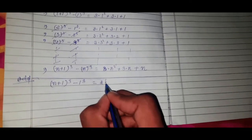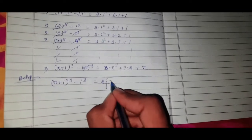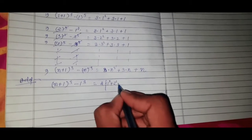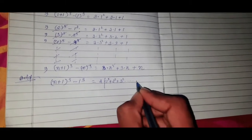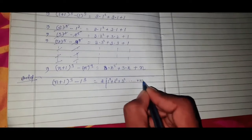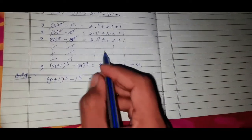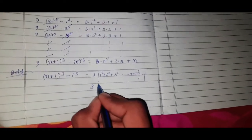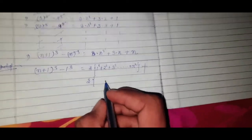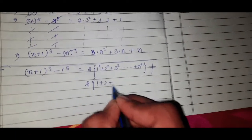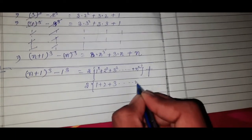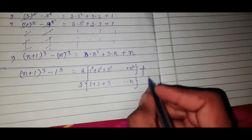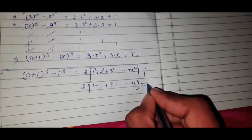After applying the telescoping trick and adding all equations, we get: (n+1)³ - 1 = 3(1² + 2² + 3² + ... + n²) + 3(1 + 2 + 3 + ... + n) + n. The sum of 1 + 2 + ... + n equals n(n+1)/2.